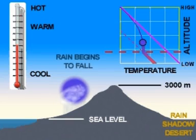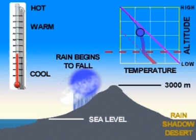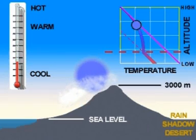Farther up the slope, precipitation occurs. Temperature cools but at a slower rate because of latent heat release.